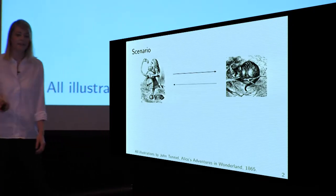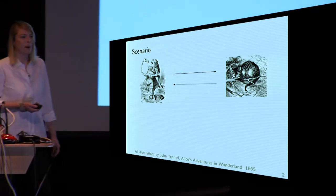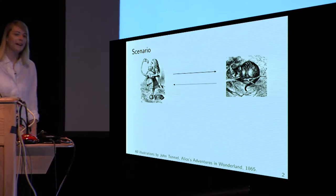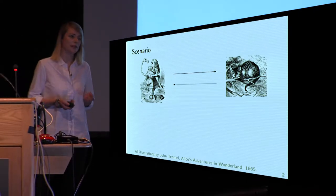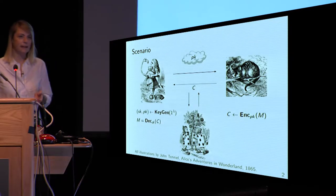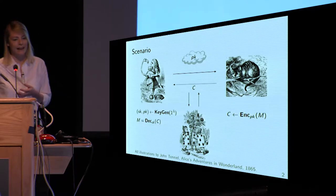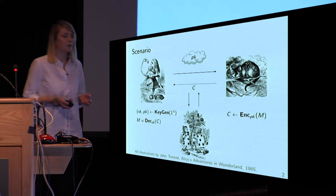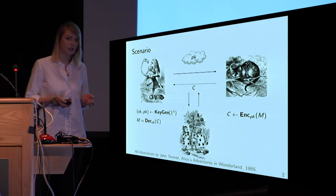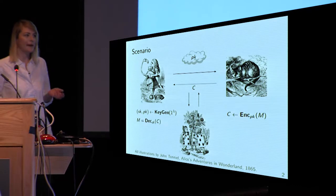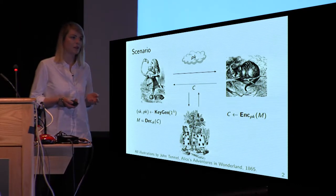As the session title already says, we're going to talk about public key encryption today. You can see this grinning cat here on the right and she wants to communicate with Alice — just to set you up with the notation. Alice publishes the public key and then the cat can encrypt messages under this public key and send them to Alice. We consider an adversary here, and we don't only want to consider passive adversaries that can listen to the communication, but even adversaries actively interfering with it.